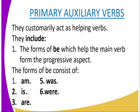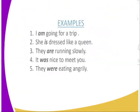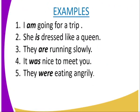The forms of 'be' help the main verb to form the progressive aspect. The forms of 'be' consist of: is, are, was, and were. Example: 'I'm going for a trip' — the progressive aspect here is the word 'going.'